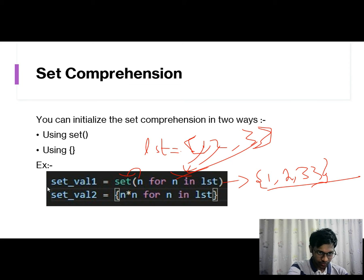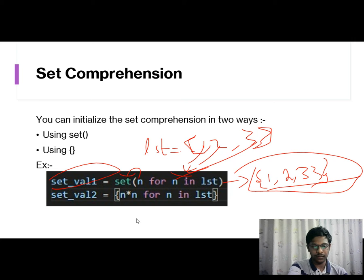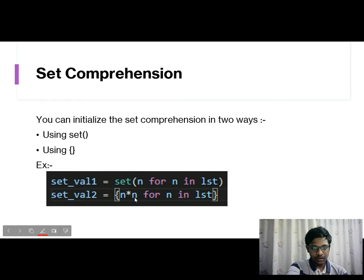If we print set_val1, we get this output. In similar fashion, n*n will also work. We're multiplying n by itself. First the for loop executes, then the n value goes here and solves n*n. If it's 1, it's 1*1, if it's 2, it's 2*2 which is 4, and the value gets stored. This is how set comprehensions work.